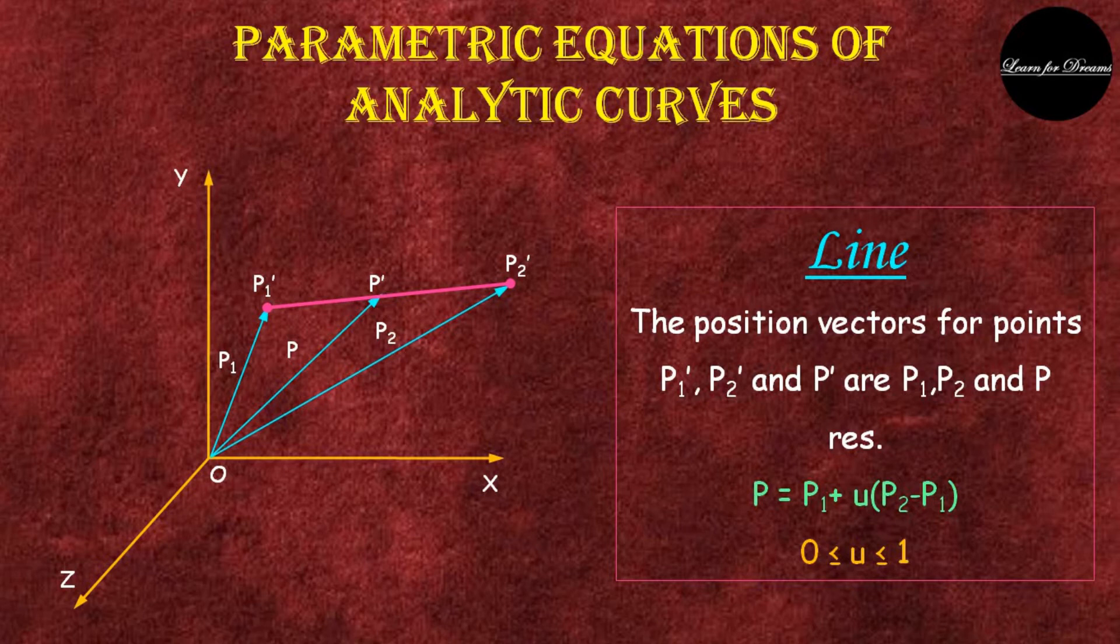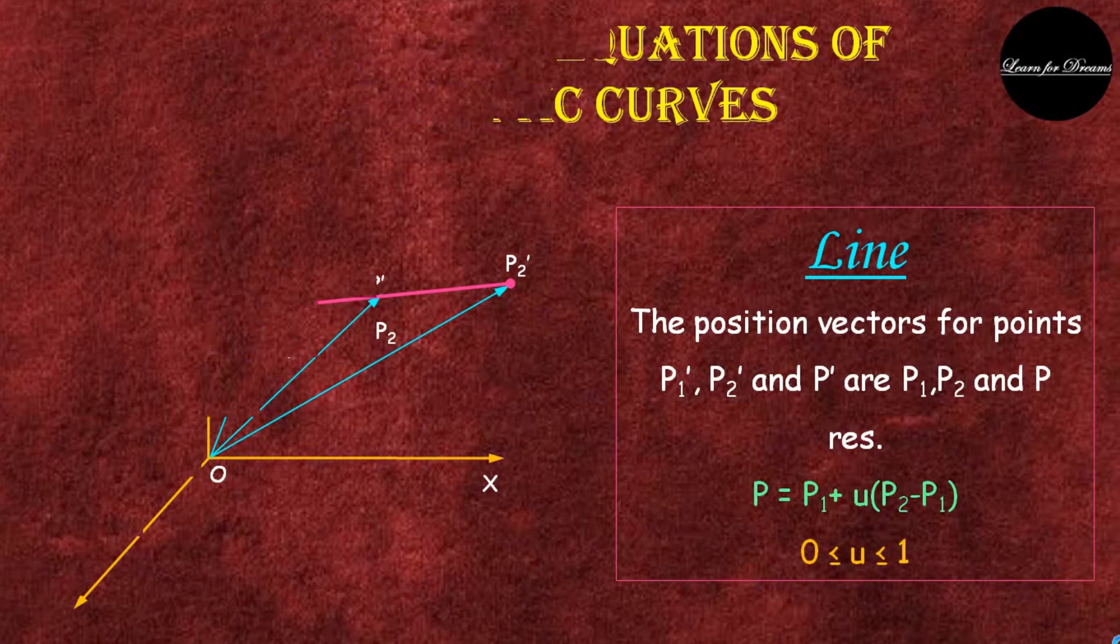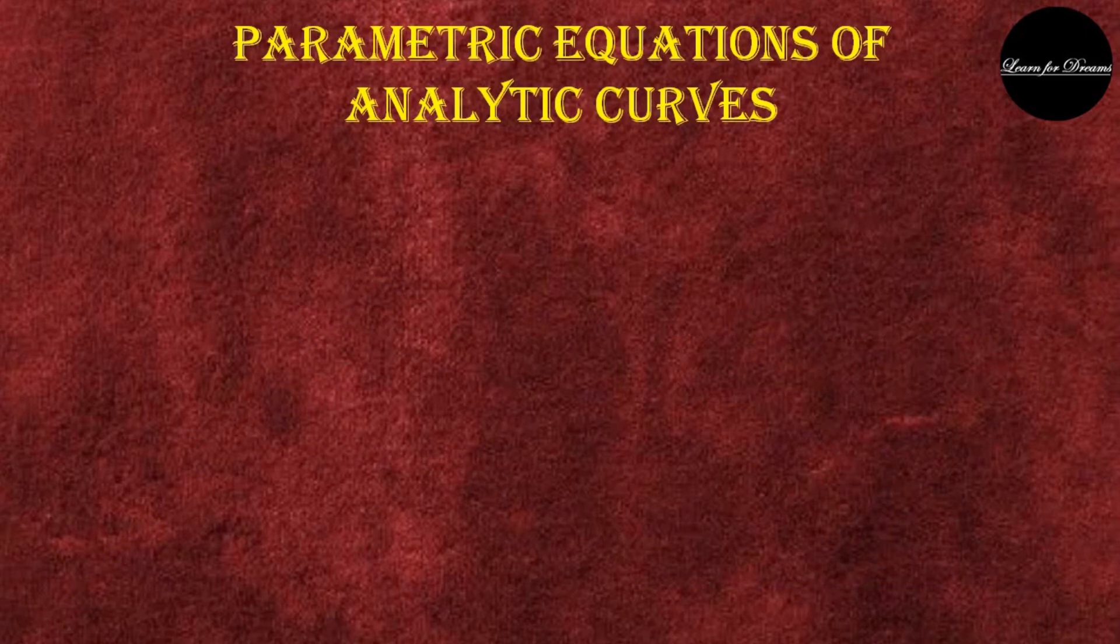The equation becomes p is equal to p1 plus u into p2 minus p1, where value of u should lie between 0 and 1. Now let's see an equation for a circle.